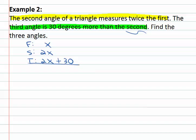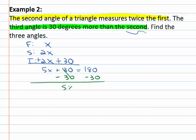Now that we've represented each angle, we know they will add to equal 180. So x plus 2x plus (2x plus thirty) equals 5x plus thirty equals 180. We can start solving: subtract thirty from both sides, giving us 5x equals 150, then divide both sides by five to find x equals thirty.